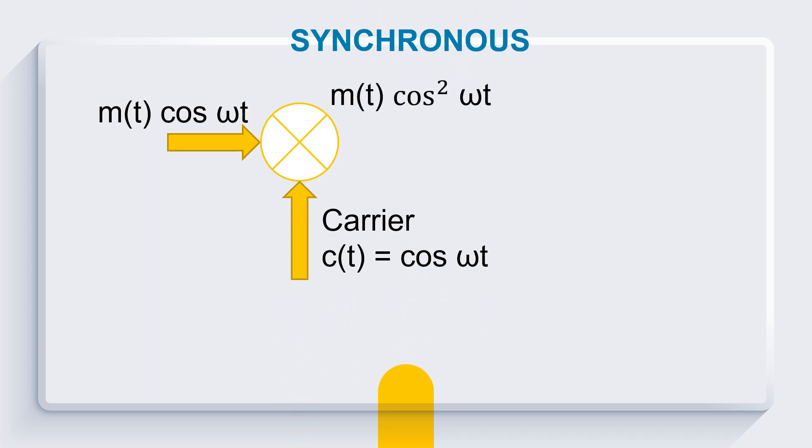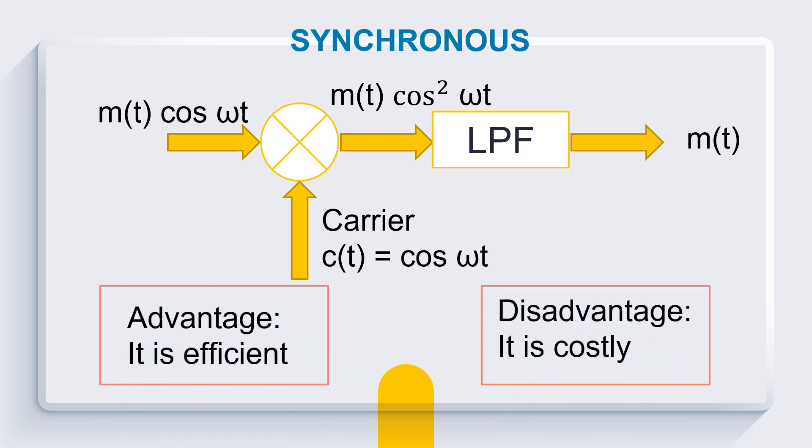First, let's talk about synchronous method. For example, the modulated signal we receive is m(t) cosine ωt. It then multiplies to our carrier signal cosine ωt. Then the product will be m(t) cosine ωt. Then the product will be passed to our low-pass filter to get the original message signal m(t). But there are advantages and disadvantages for this method. This method is efficient, but most likely it is expensive.